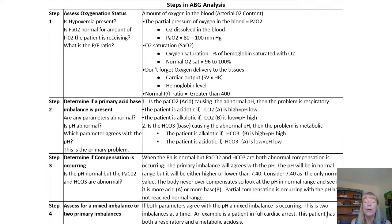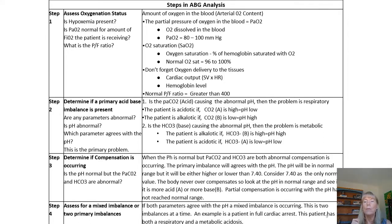Here are the four steps to analyzing any ABG. If you always follow these steps, you won't miss things. Step one is the assessment of your oxygenation status. Then we go on to look for the primary acid-base imbalance. Then we look for compensation. And finally, we look to see if there are any mixed acid-base imbalances.